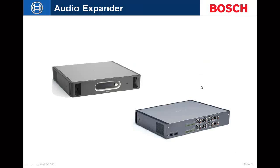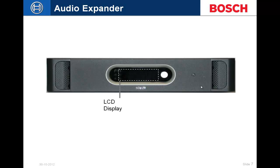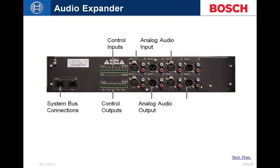The audio expander is an expansion unit with the same audio inputs and outputs as the network controller. However, it does not have TCP/IP input or a front-mounted speaker. It provides control inputs, control outputs, and analog inputs and outputs — four in and four out in both RCA and XLR. Control inputs are supervised, same as the network controller. All five control outputs are accessible. It is not a power supply; it is powered via the system bus from the network controller.